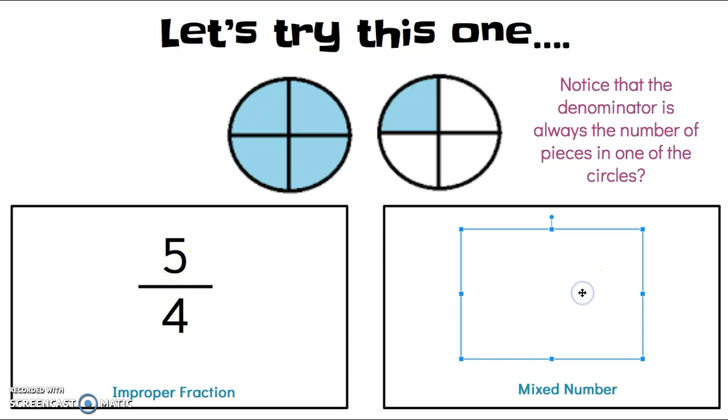So, if we were representing this as a mixed number, we would write it as 1 and 1 quarter. Notice again, the denominator stays the same. We have 1 full pie and 1 out of 4 pieces shaded in the second pie.